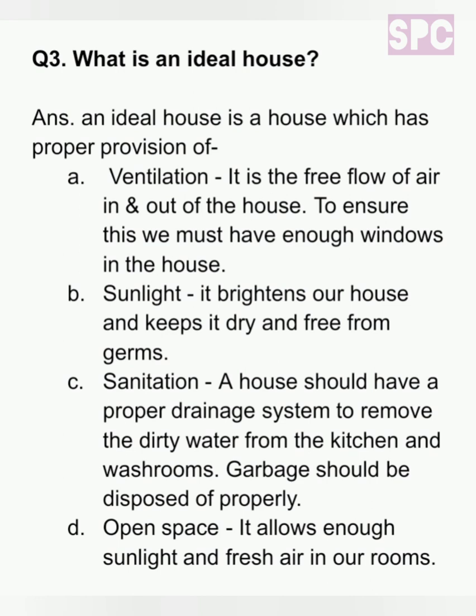Question 3: What is an ideal house? Answer: An ideal house is a house which has proper provision of: A. Ventilation — it is the free flow of air in and out of the house; to ensure this we must have enough windows. B. Sunlight — it brightens our house and keeps it dry and free from germs. C. Sanitation — a house should have a proper drainage system to remove dirty water from the kitchen and washrooms, and garbage should be disposed of properly. D. Open space — it allows enough sunlight and fresh air in our rooms.